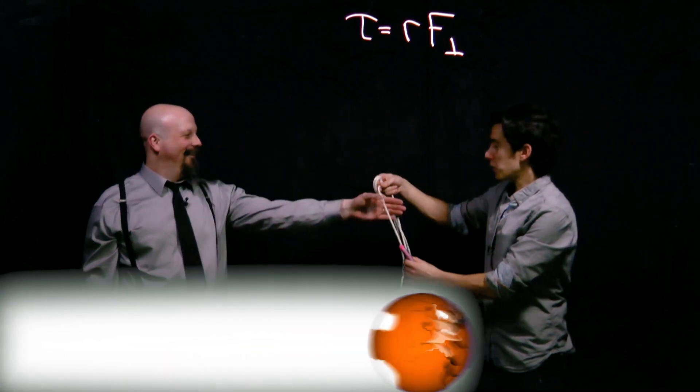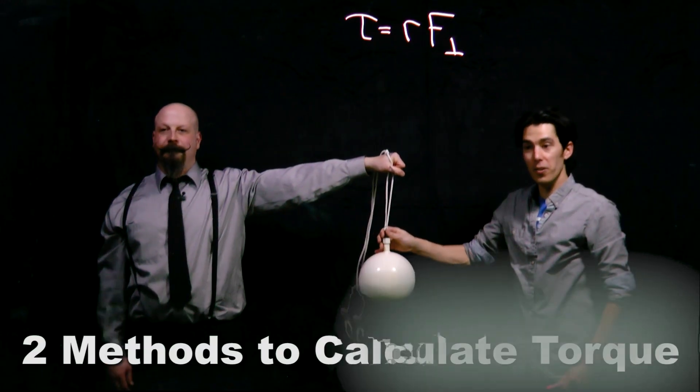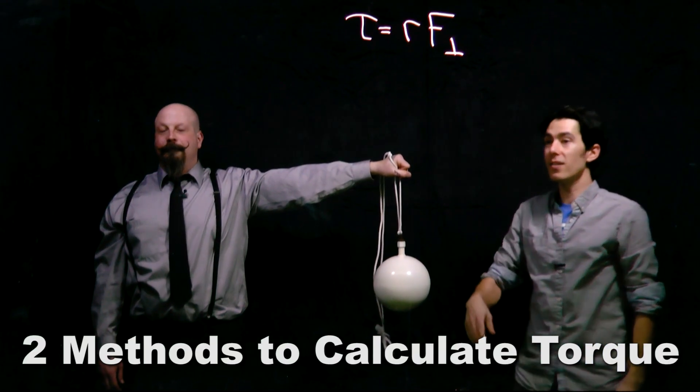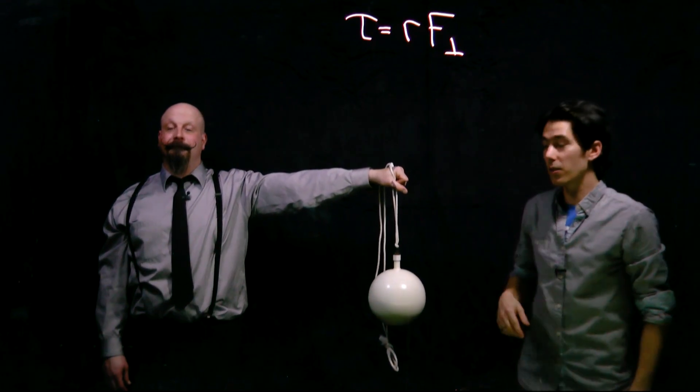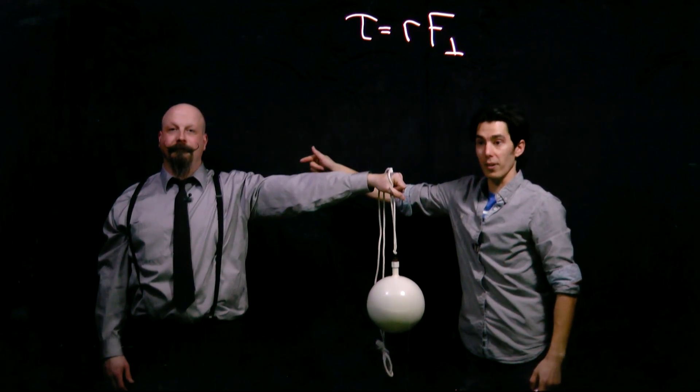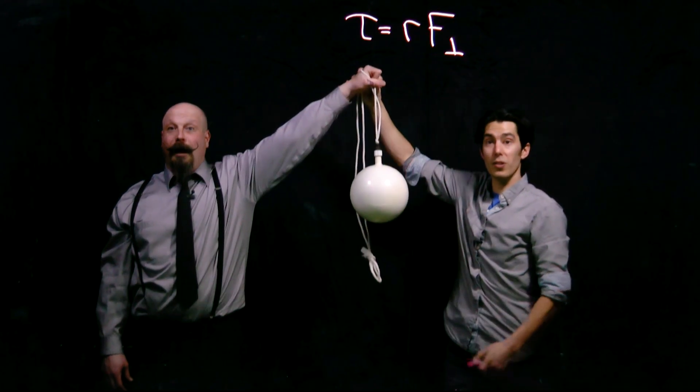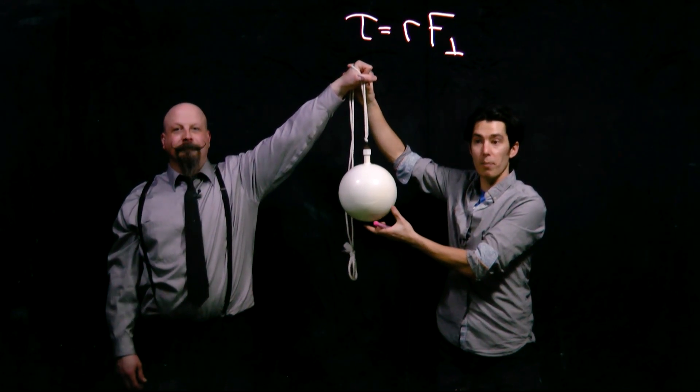By now you guys know that torque is the ability for a force to cause rotation. It depends on not only the force, but the distance between where the force acts and the pivot point. In the last module you looked at what happens if R and F are not perpendicular.